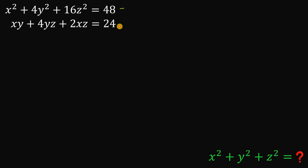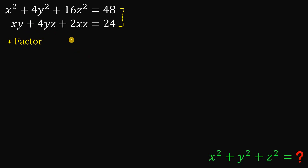Given these two equations with three unknown variables, the goal is to evaluate x squared plus y squared plus z squared. Now, if we have two equations and three variables, the only possible approach here is to factor these expressions out. What is our clue for factoring this kind of equation?